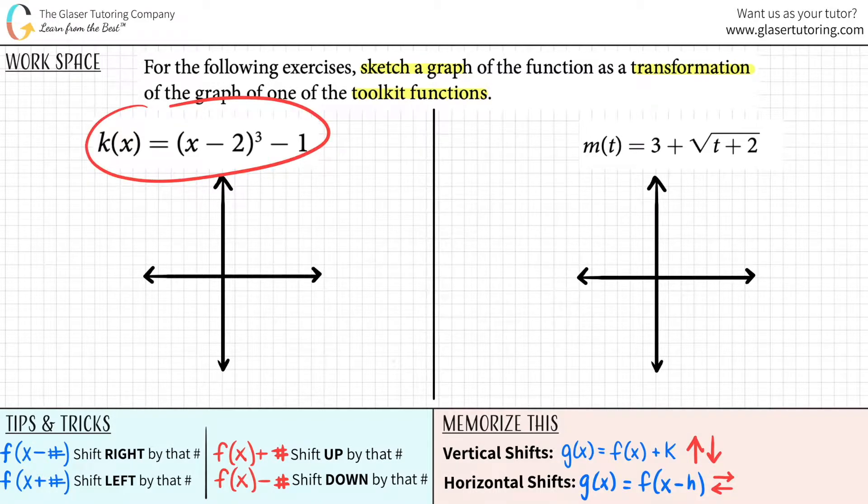For k(x) equals (x minus 2) cubed minus 1, your original function, and what you're going to do every time you're trying to look for an original function, is strip away all of the big numbers like minus 2, get rid of that, minus 1, get rid of that. You only care about what's happening to the x value. In this case, the x, if I strip away this minus 2, it's actually being raised to the third. So this original function was k(x) equals x to the third.